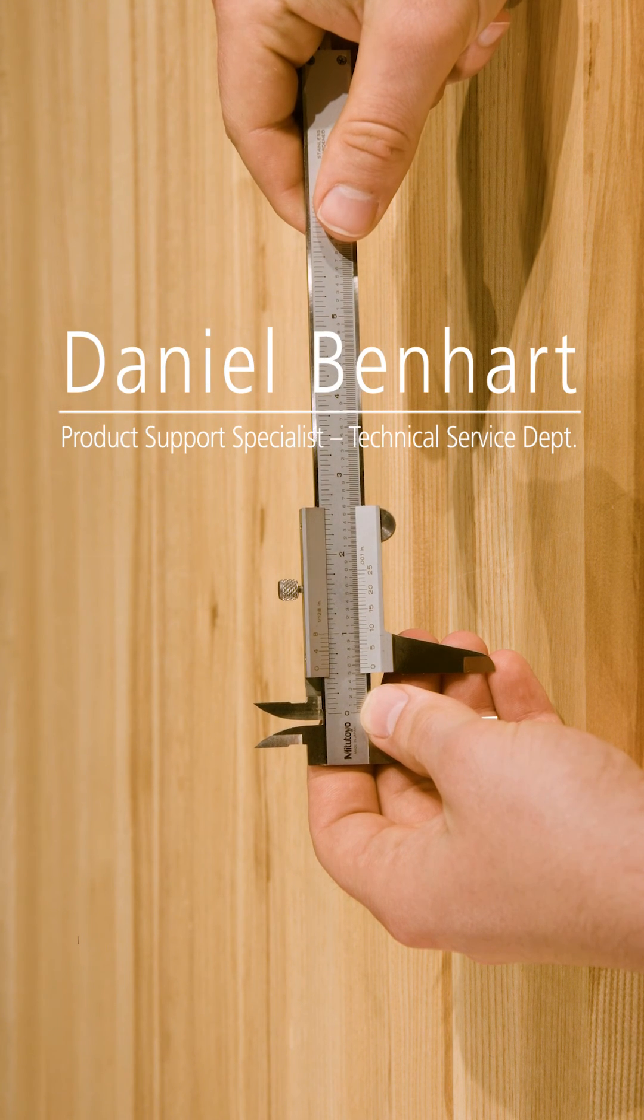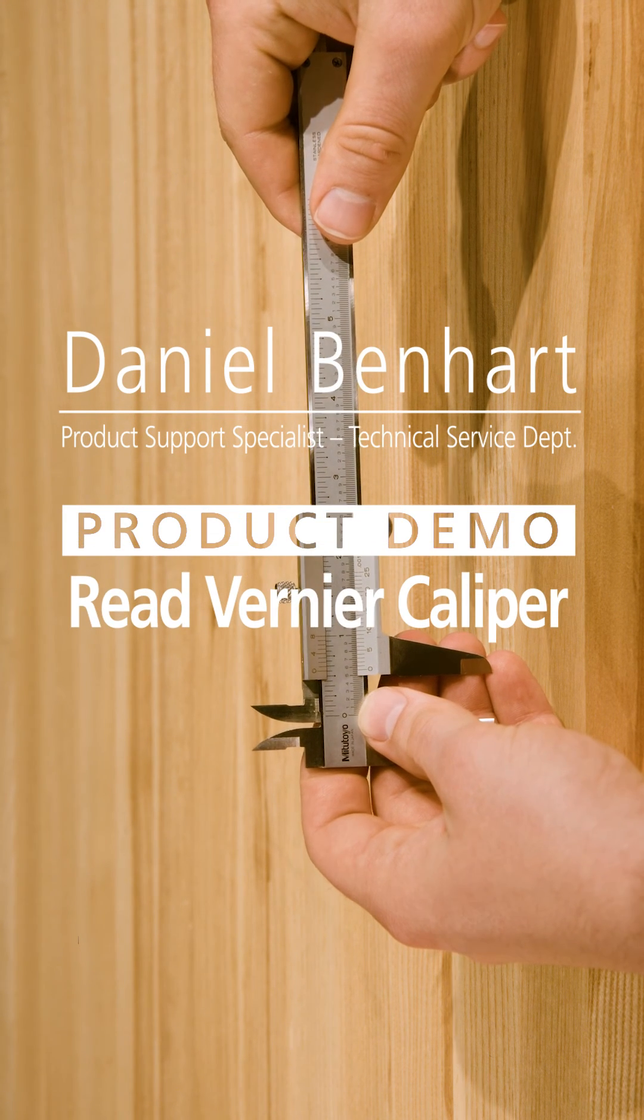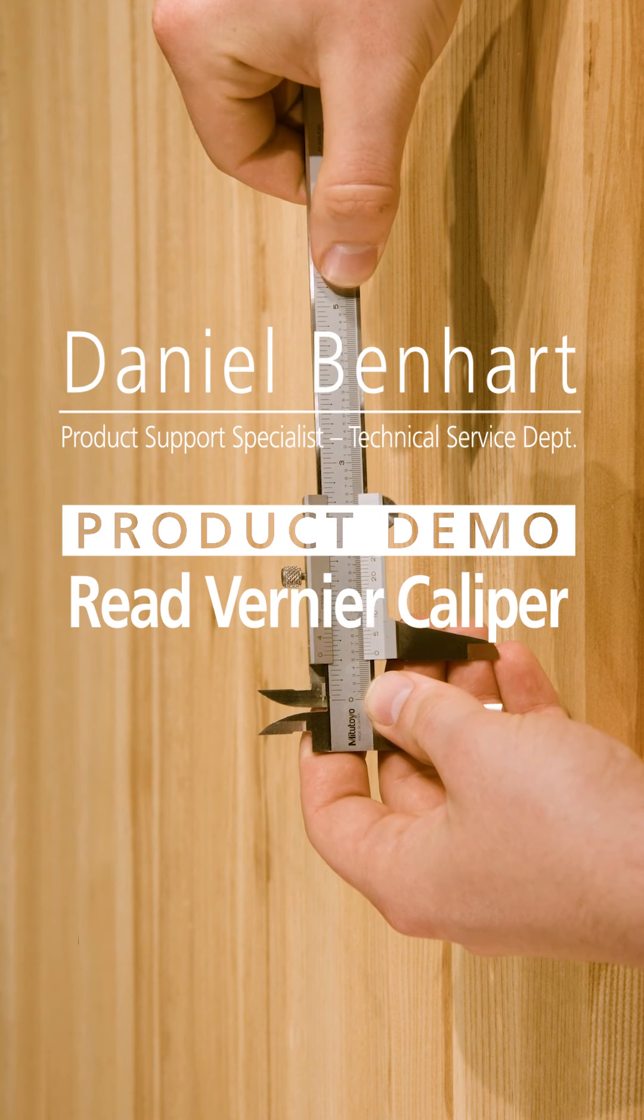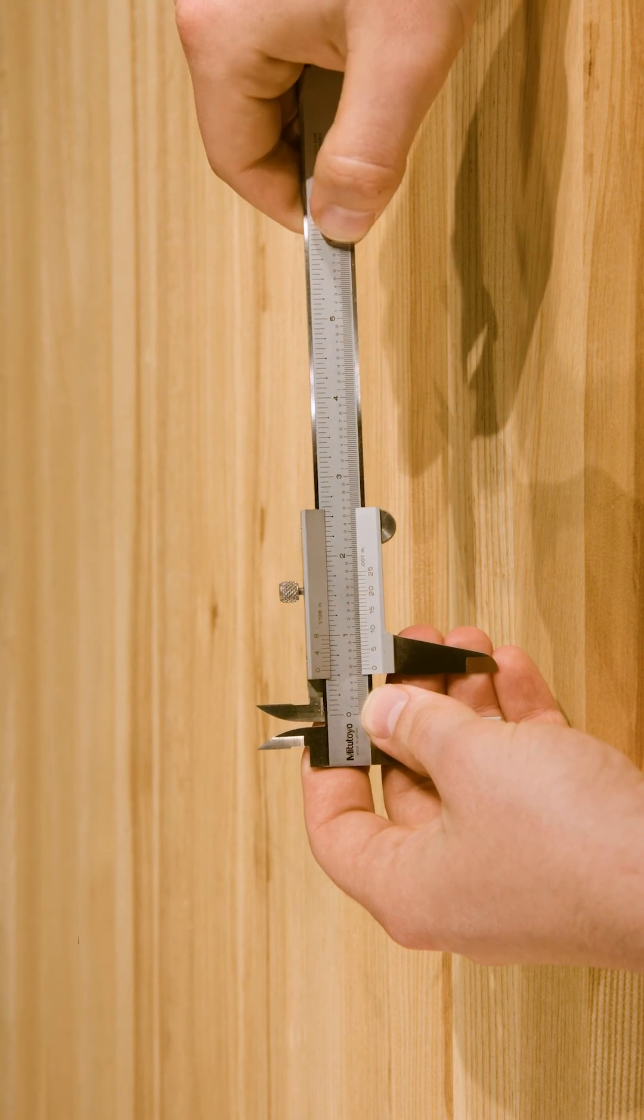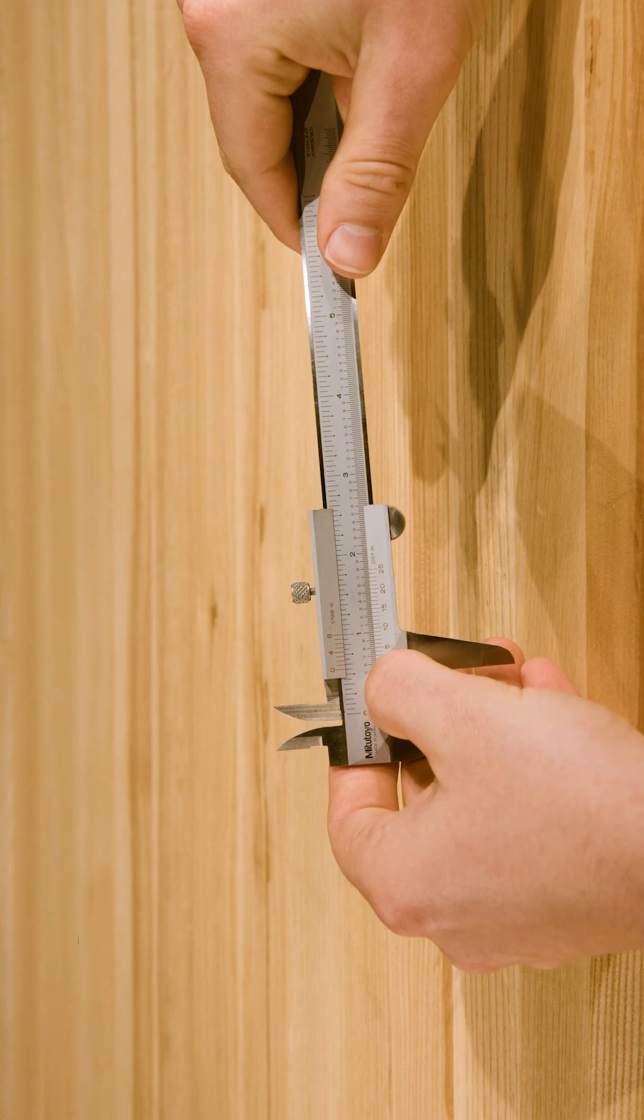There are two sets of graduations on a vernier caliper. On inch calipers like this one, the main scale is marked in .025-inch intervals and is read directly by finding the last graduation passed by the zero mark on the sliding jaw.